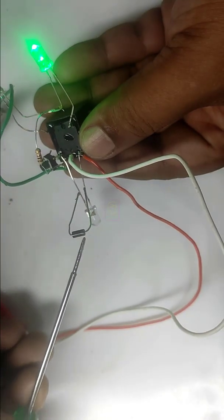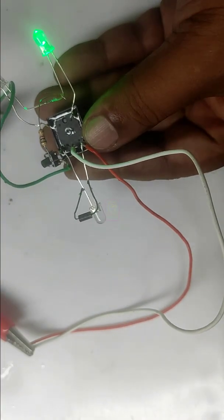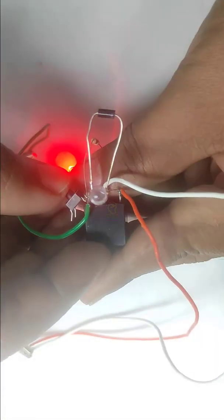I will connect a 1N4007 diode across the relay coil, which is called a flyback diode. It will give a free path to the back EMF.